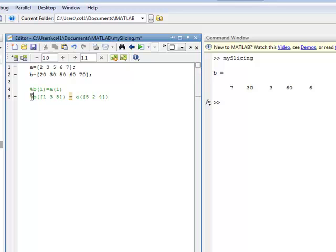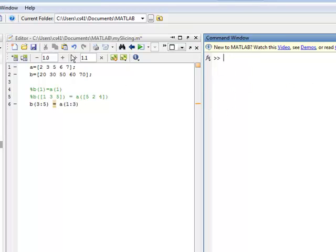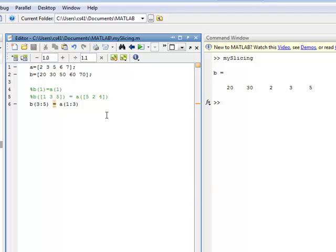Once again, I'll comment this out. And then the next one is b(3:5) gets a(1:3). Let me clear this so you can see it better. So now b at 3, 4, and 5 get a(1), 2, and 3. So the first two elements, 1 and 2 of b, remain unchanged. So the 20 and 30 stay the same. And then 3, 4, and 5 at 50, 60, and 70 get replaced by the first three elements of a, indexes 1, 2, and 3, which are the values 2, 3, and 5. So that's how that one works.